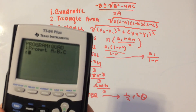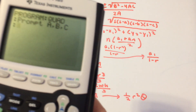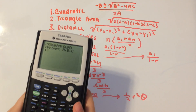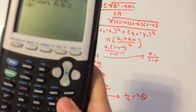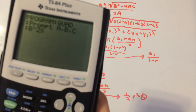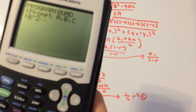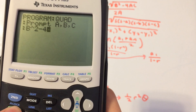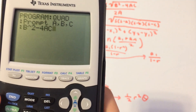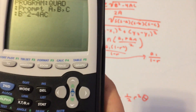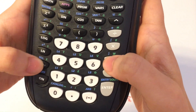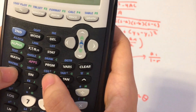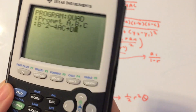For the next step we're going to find the discriminant, which is what's underneath the square root sign. That's B squared minus 4AC. So type Alpha B, caret 2, minus 4, Alpha A, Alpha C. Then hit STO to store it into Alpha D, which will be our discriminant variable.